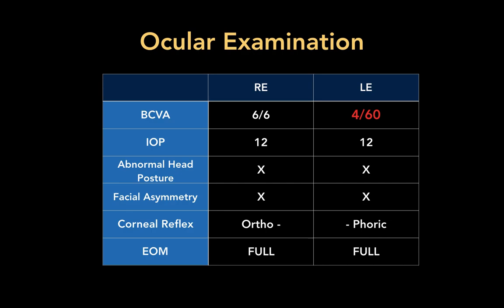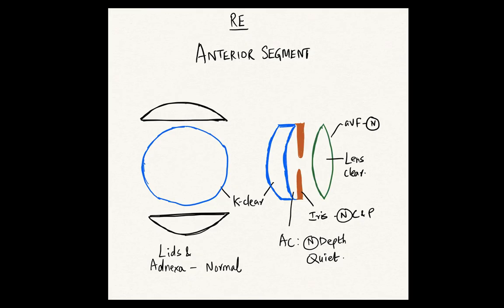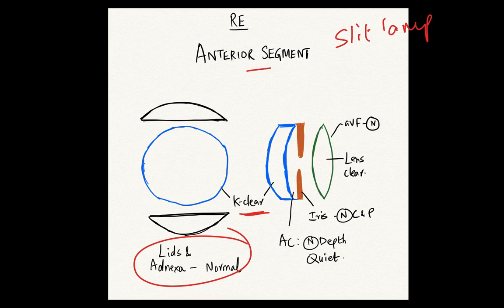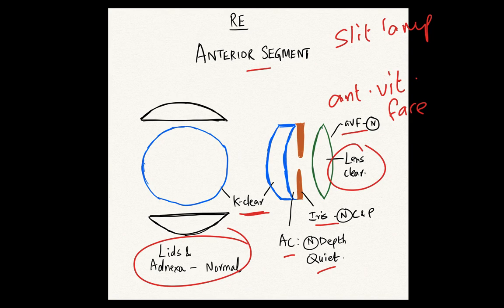On ocular examination, the right eye was fine, but the left eye vision was only 4/60, which is very much reduced. IOP was fine. There was no abnormal head posture, the face was symmetrical, the corneal reflex was orthophoric (no squinting), and extraocular movements were full and free. The right eye anterior segment on slit lamp showed normal lids and annexes, clear cornea, normal iris, normal anterior chamber, clear lens, and normal anterior vitreous face with no cells.